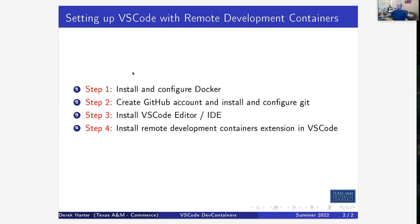In order to do this, you need to do these four steps: install and configure Docker; create a GitHub account and install and configure Git, although this might be optional depending on whether we're using GitHub Classrooms or not — but you should go ahead and install Git in any case. Install the VS Code editor. We're going to be using this with an extension called Remote Development Containers, or Dev Containers for short, which uses Docker as a back-end. We're basically using this to provide a common set of development tools so that everybody's using exactly the same editor, code formatters, and other tools for the assignments for this class.